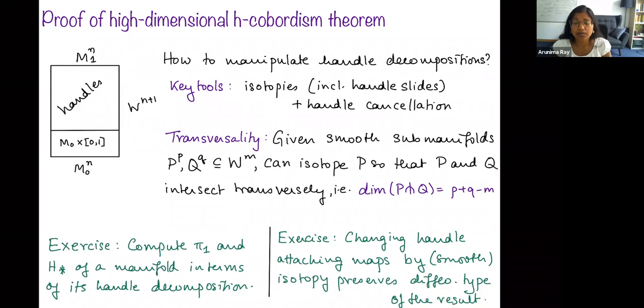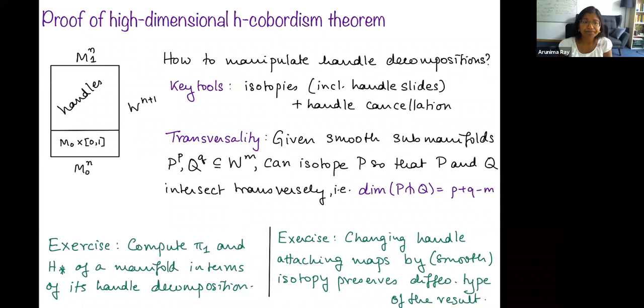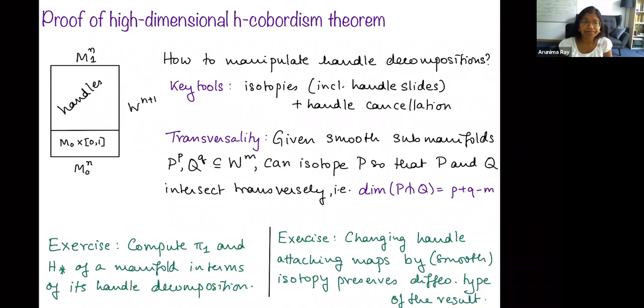Another useful tool is that we can compute the algebraic topology of the handle decomposition explicitly in terms of its handles. Handle decompositions are analogs of CW decompositions in the manifold setting. Just as for CW complexes we have cellular chain complexes and cellular homology, for handle decompositions we have the same thing.